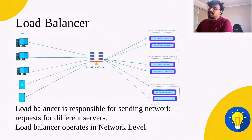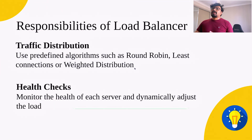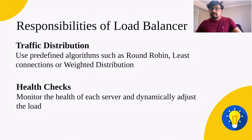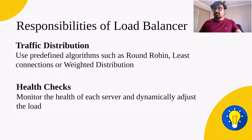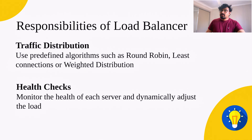The load balancer operates at the network level. It is responsible for sending network requests to different servers. We have three server instances — all requests come to the load balancer, and it distributes them to the available virtual machine instances. The main responsibility is traffic distribution using predefined algorithms such as round robin, least connection, or weighted distribution. The load balancer also performs health checks to monitor whether each server is up or down and dynamically adjusts load accordingly.